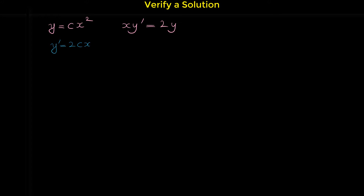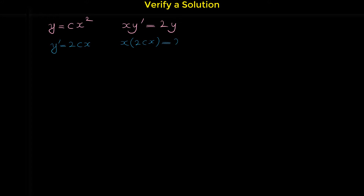Now, if we replace y prime with 2cx and replace y with cx squared, the two sides of the equation should be equal to each other. So x times y prime, which is 2cx, must equal 2 times y, which is 2 times cx squared.